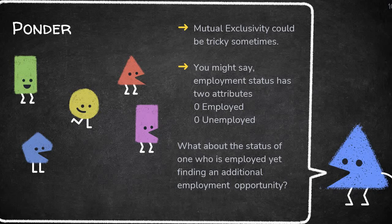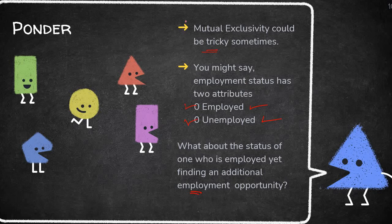Especially in social sciences research, mutual exclusivity could be tricky. For example, you might say employment status has two attributes — being employed or unemployed — but what about the status of one who is employed yet finding an additional employment opportunity? If he has to identify himself, he would identify with both. So it would be difficult to maintain mutual exclusivity at times.